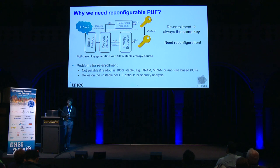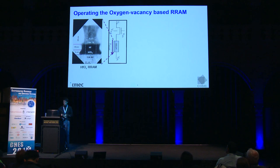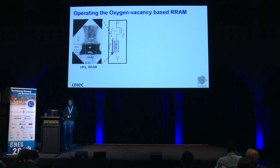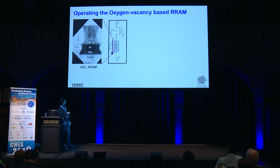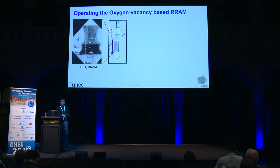Now let's look at why we consider ReRAM as a reconfigurable source. Here is an example of an oxygen-vacancy-based ReRAM based on hafnium oxide. Like a normal resistor, it has two terminals, and in between there is a hafnium layer and a hafnium oxide dielectric layer. The ReRAM is typically connected to an access transistor, which allows us to program and read a specific ReRAM cell.